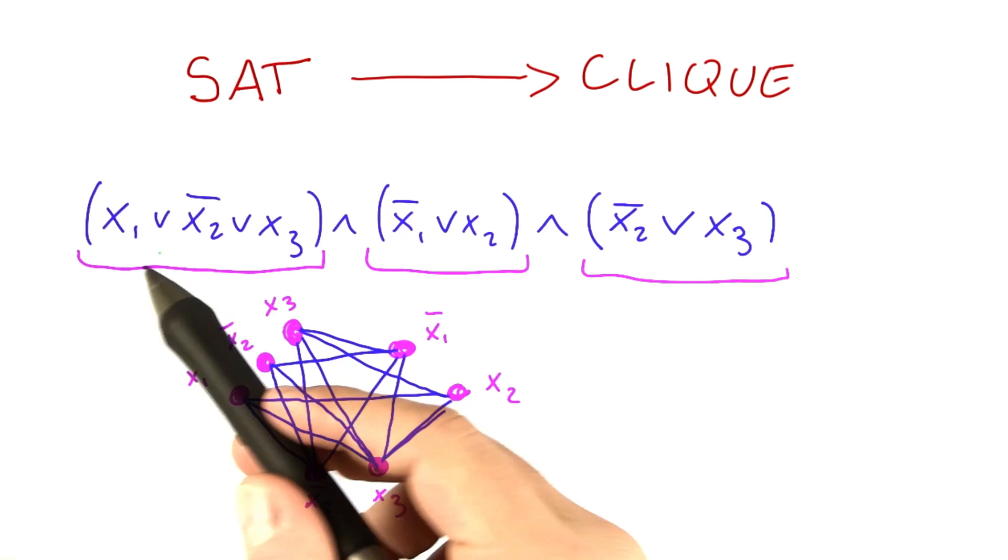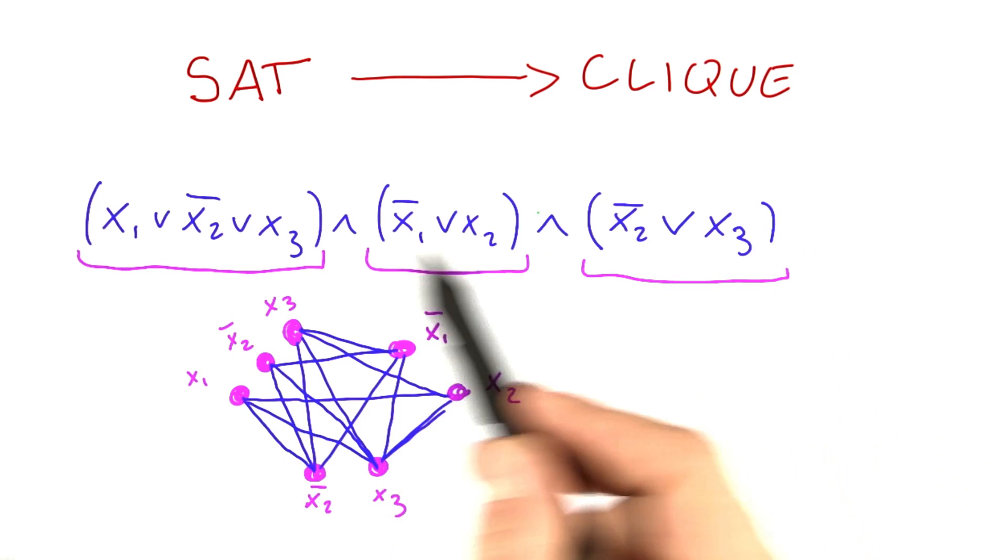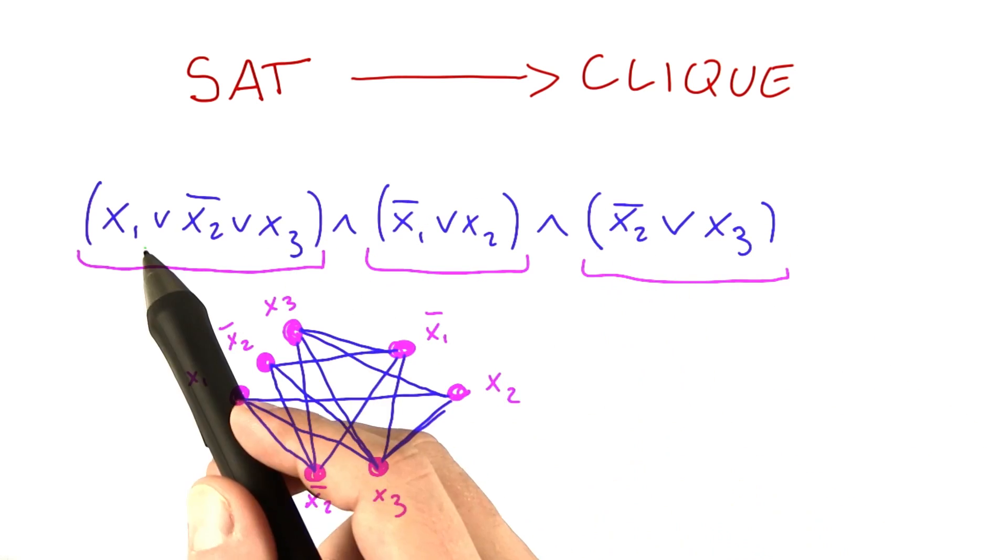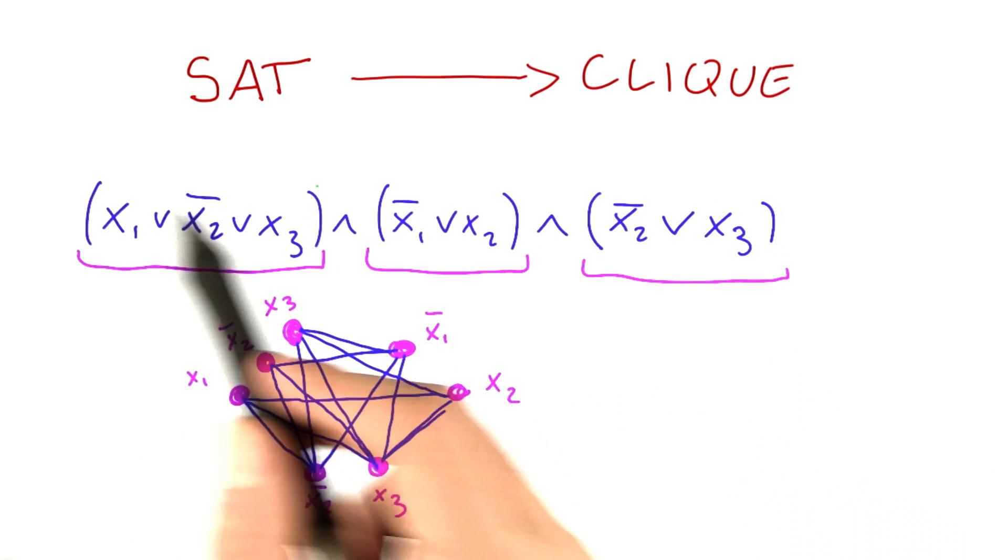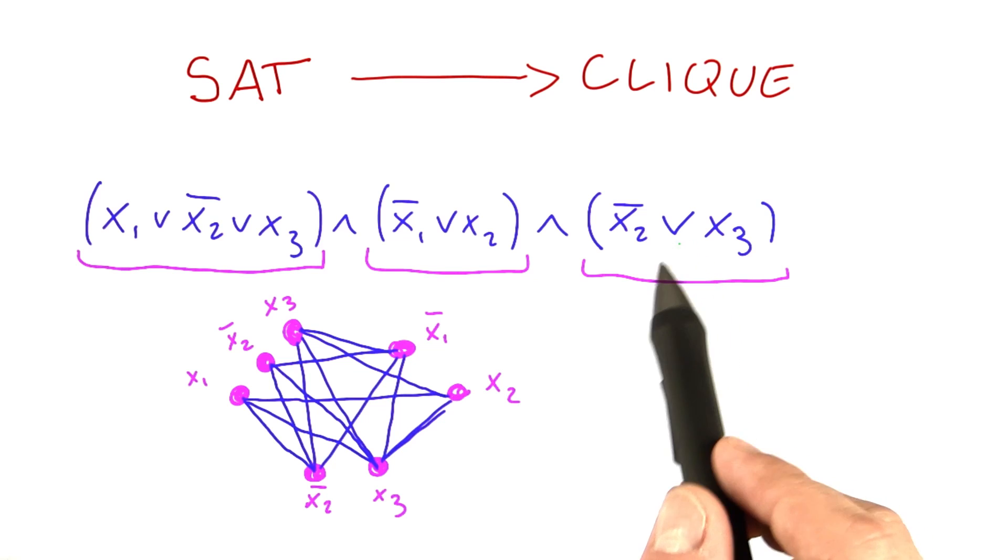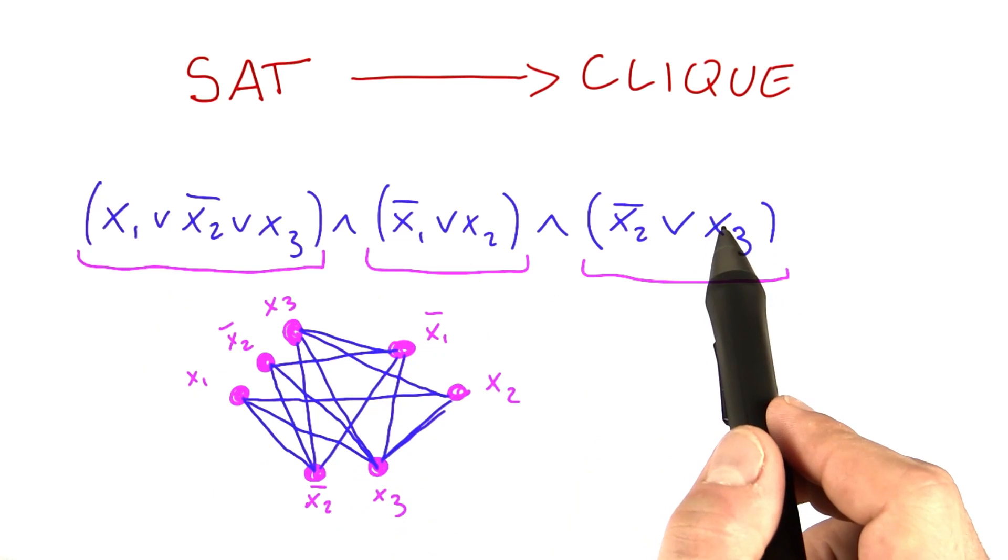Now what about the size of the graph? So if the Boolean formula here has polynomial size, so we have n variables, or in this case three variables, and we said that we're going to have the total length of the Boolean formula be polynomial in the number of variables. So if this length here is polynomial,